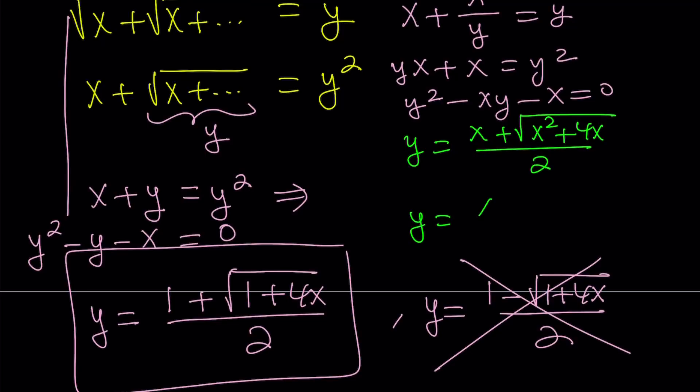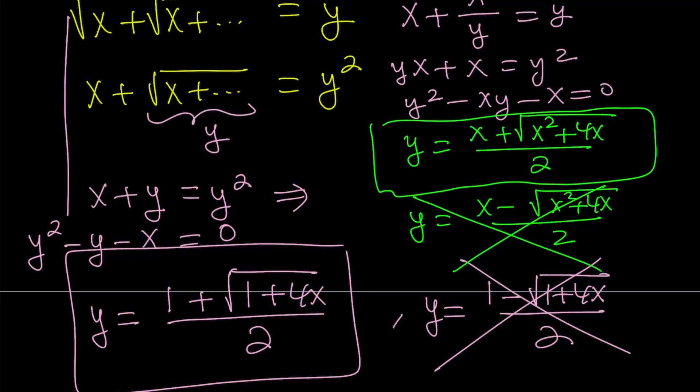And the other solution is x minus square root of x squared plus 4x, divide by 2. But I don't want this because this is not good. It's negative, so on and so forth. Problematic. So this is the y value I will be using. But notice that we're talking about the same y here. So they're equal. Let's go ahead and set them equal to each other.